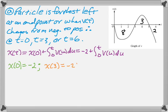x(3) = -2 plus the integral from 0 to 3 of v(t)dt, which is -2. Since we're moving from left to right along the t-axis, that 8 is going to be negative, so that gives us -10.